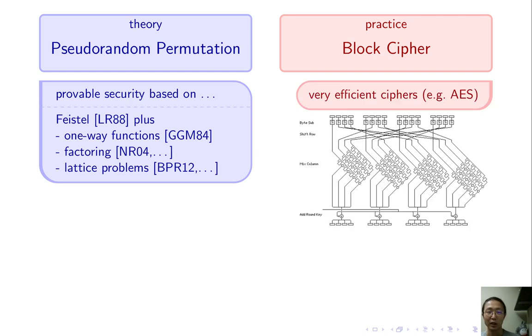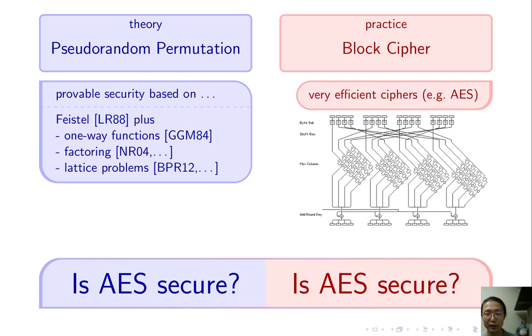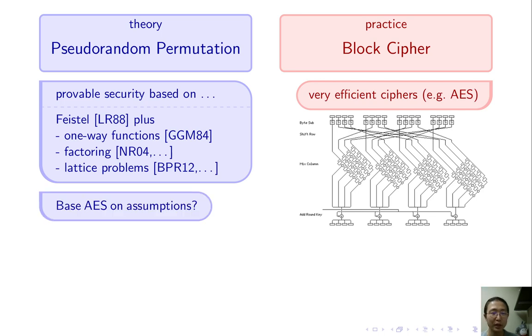In practice, people use much more efficient block ciphers such as AES. Of course, everyone wants to understand whether AES is secure. From the theory perspective, we want to base AES on hardness assumptions. But we don't know how to do it. We don't even have a candidate assumption.